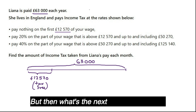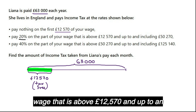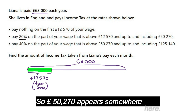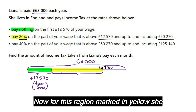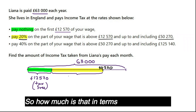Pay nothing on the first £12,570 of your wage. Then, pay 20% on the part of your wage that is above £12,570 and up to and including £50,270. So £50,270 appears somewhere on the bar, and for this region marked in yellow, she needs to pay 20% tax.